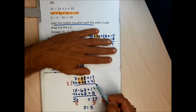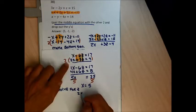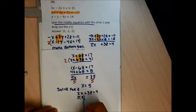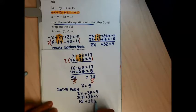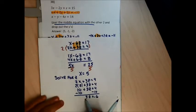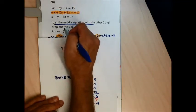Now I'll solve for z using the equation 2x plus 3z equals 4, because z has a positive coefficient. Plugging in x equals 5: 2 times 5 plus 3z equals 4, so 10 plus 3z equals 4. Subtracting 10 from both sides gives 3z equals negative 6, and dividing by 3 gives z equals negative 2. So x equals 5 and z equals negative 2.